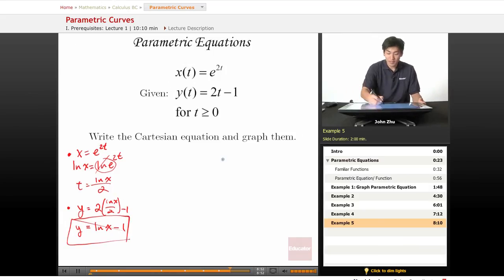Well, graphing this is fairly simple because now that we have this form, the Cartesian form, we know that y is just ln of x shifted down by 1 unit.